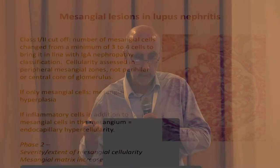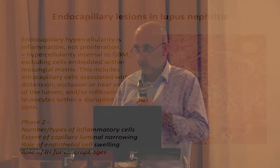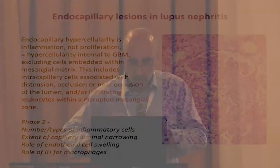In terms of the major phase one changes: we defined mesangial hypercellularity and brought it in line with the IgA nephropathy definition, changing the minimum from three to four mesangial cells per peripheral mesangial segment. Whether mesangial hypercellularity severity and extent has any impact on outcome or treatment is left to phase two. Endocapillary lesions were discussed at length — over two hours of argument about what the definition of endocapillary hypercellularity should be. We reached agreement in the meeting room, but by publication time part of the agreed definition had somehow disappeared. The significance of number and type of inflammatory cells, and the role of macrophages, is left to phase two.